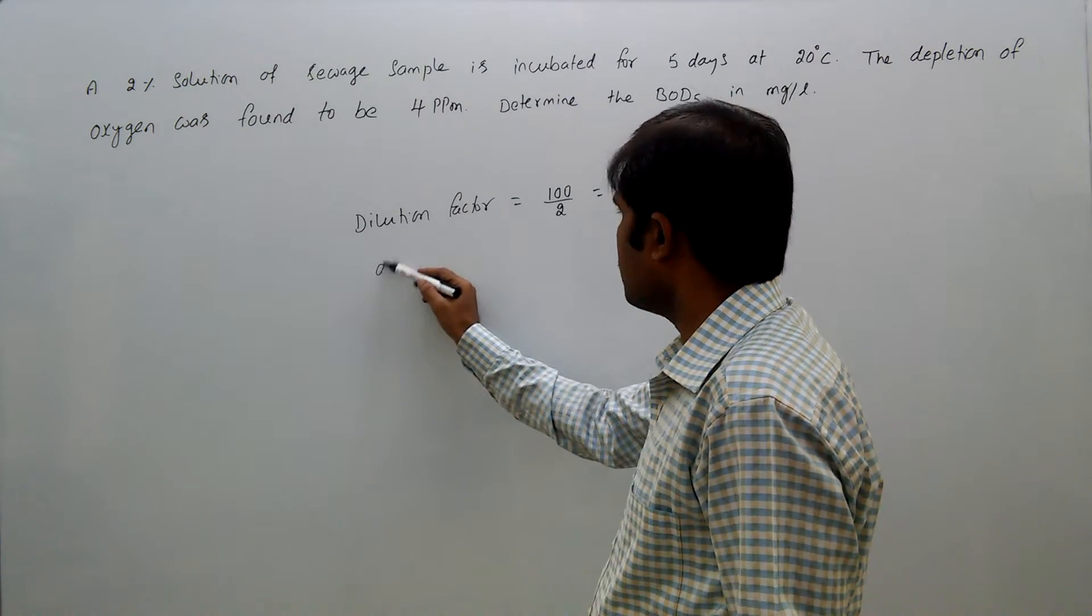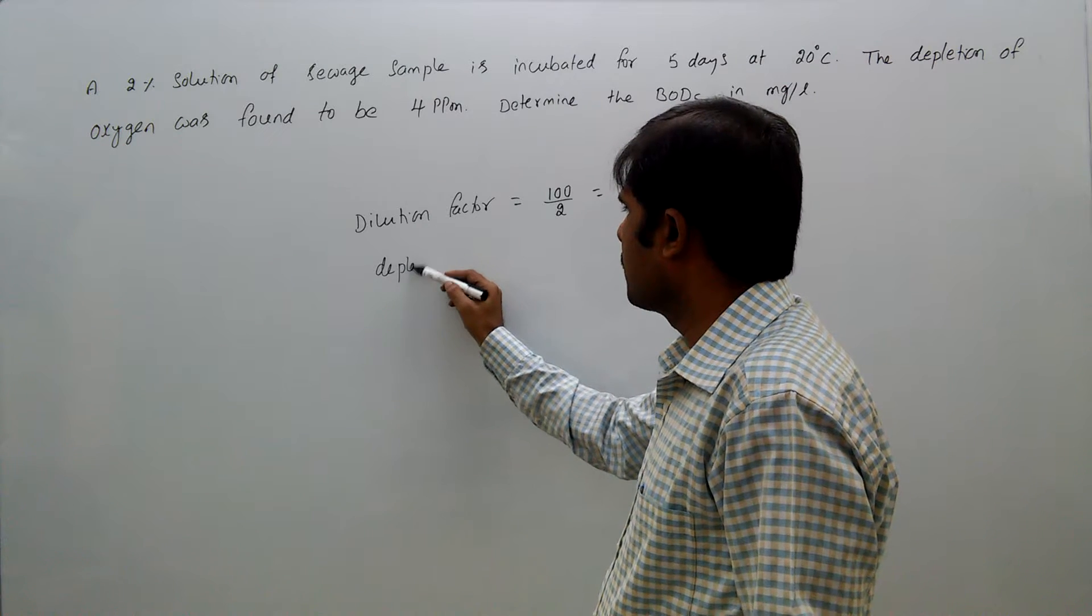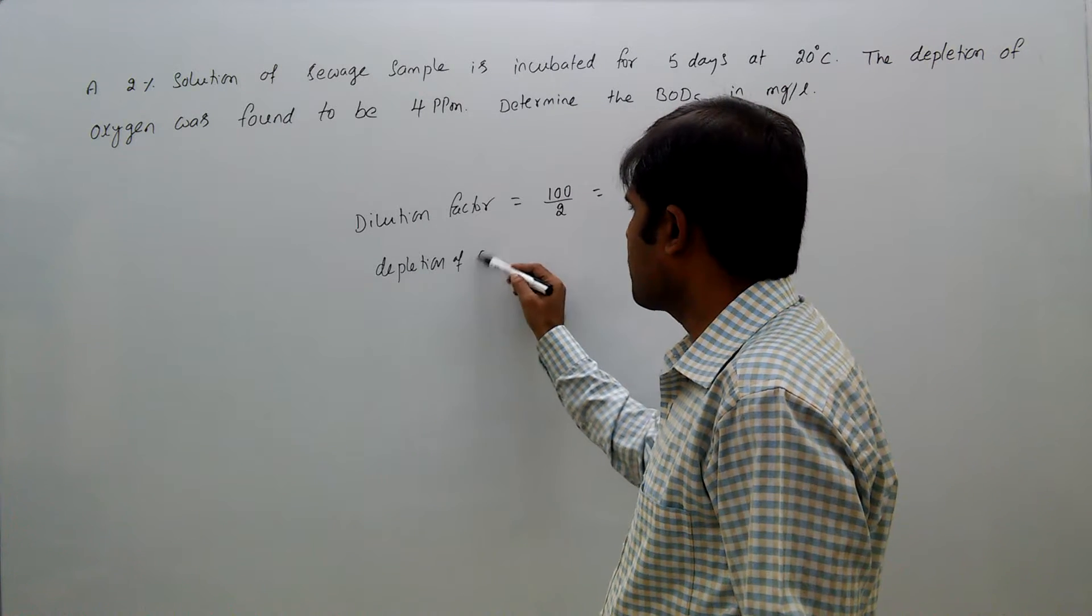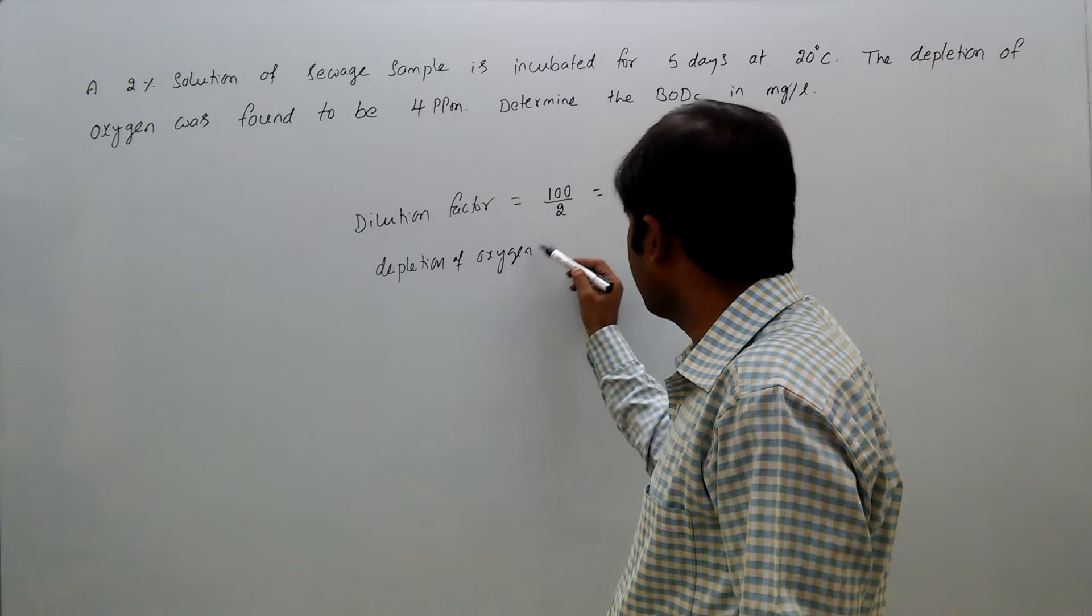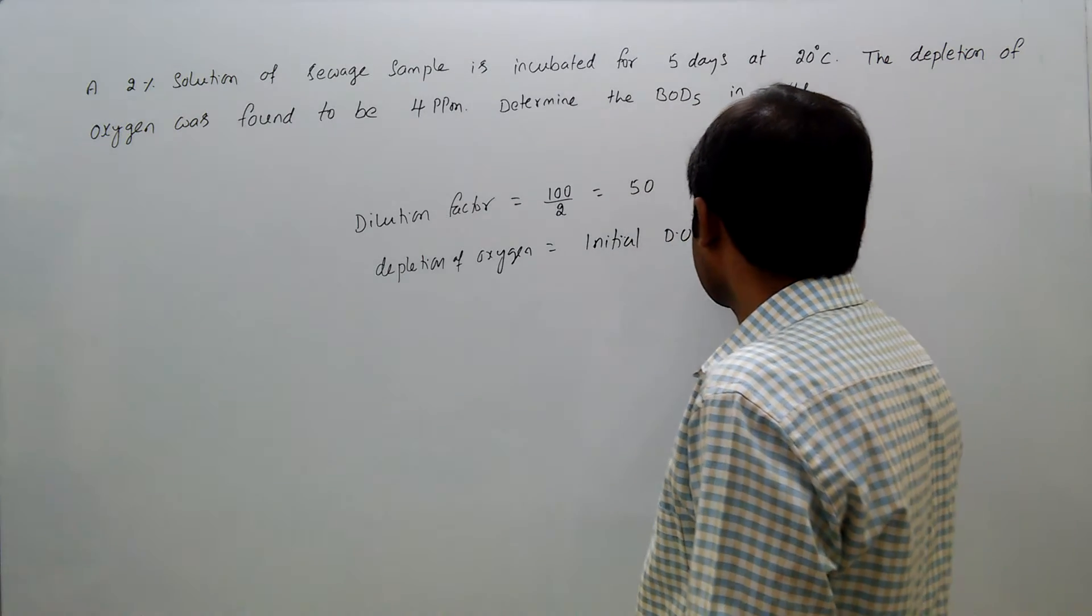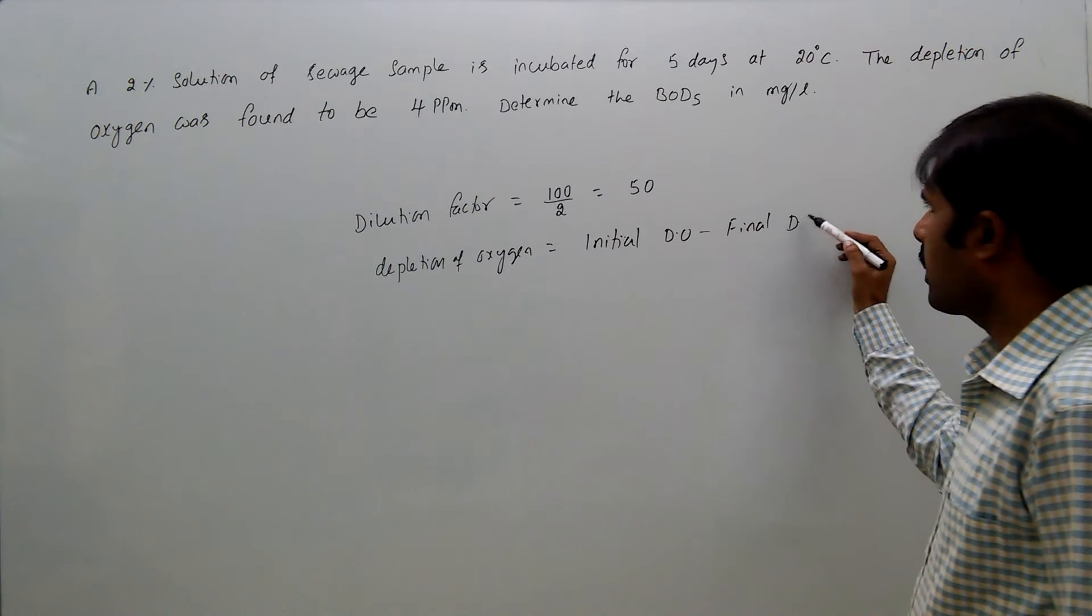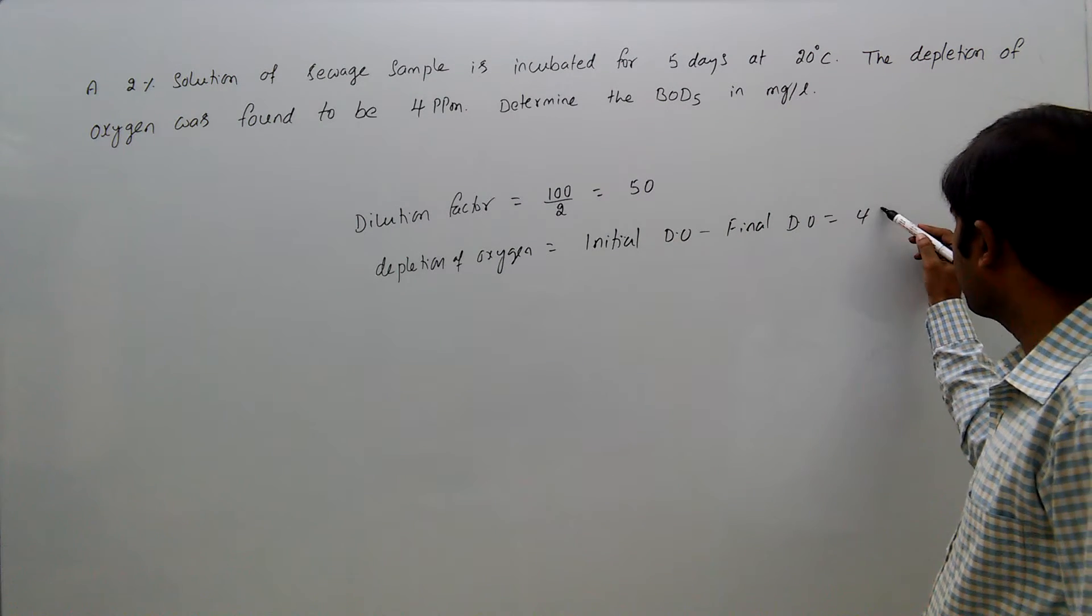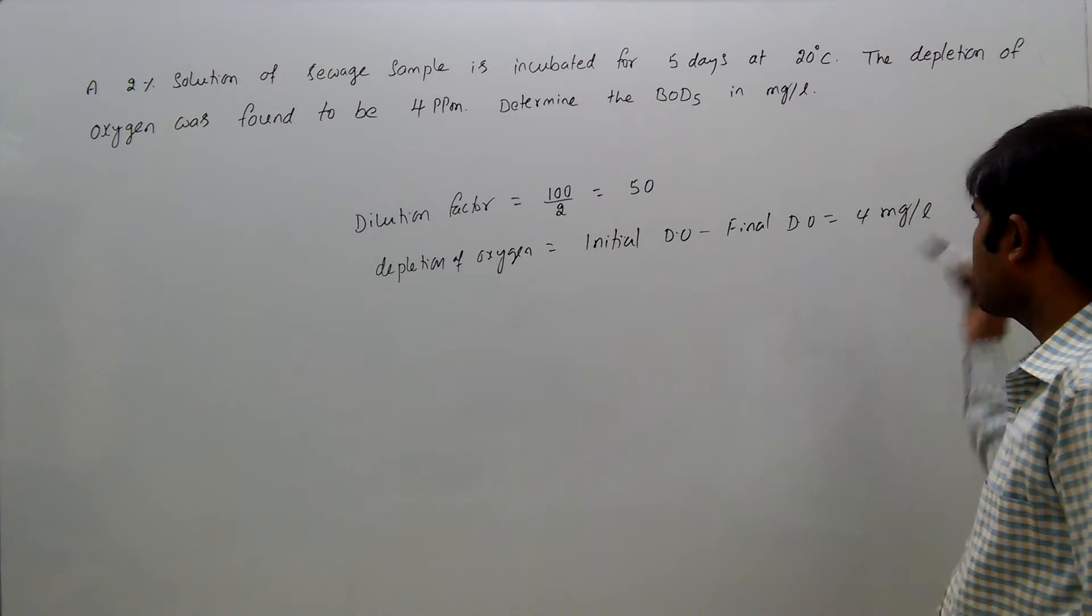Depletion of oxygen is initial DO minus final DO, which equals 4 mg per litre. PPM means mg per litre.